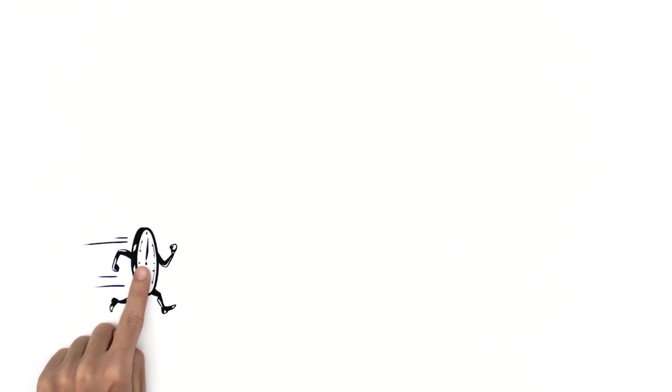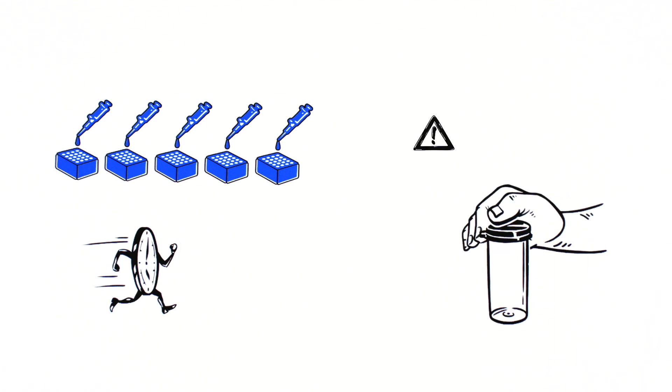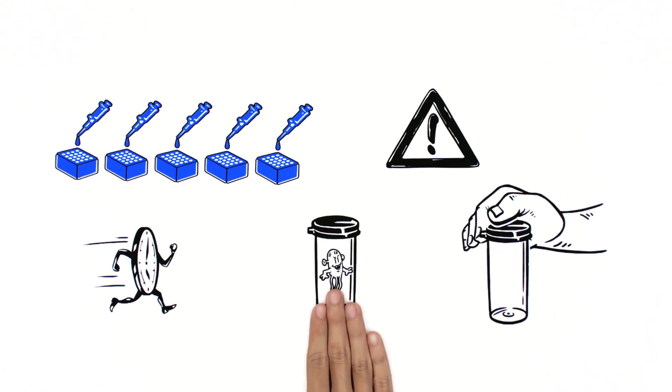Although the overall time to result is faster, there are many pipetting steps. This increases manual handling, adding to the risk of error and cross-contamination.